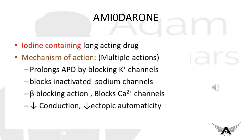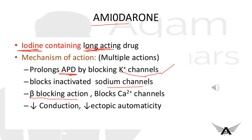Amiodarone is a very important Class 3 drug, asked frequently in university exams. It is an iodine-containing, long-acting drug. Its mechanism of action: it prolongs the APD by blocking potassium channels in phase 3; it also blocks inactivated sodium channels, has beta-blocking action, and blocks calcium channels. It decreases conduction and decreases ectopic automaticity.